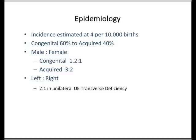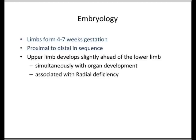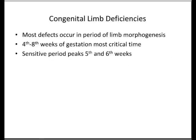In terms of embryology, the limbs form between 4 to 7 weeks of gestation in a proximal to distal sequence. The upper limb develops slightly ahead of the lower limb, but simultaneously with organ development, and is associated with radial deficiency. The apical ectodermal ridge controls proximal to distal limb growth, and most defects will occur in this period. The most critical time is 4 to 8 weeks of gestation, in the first trimester, with the most sensitive period for deficiencies occurring between the 5th and 6th week.